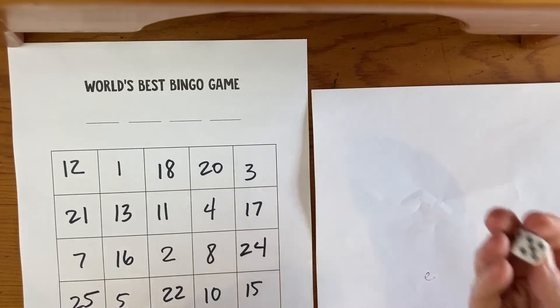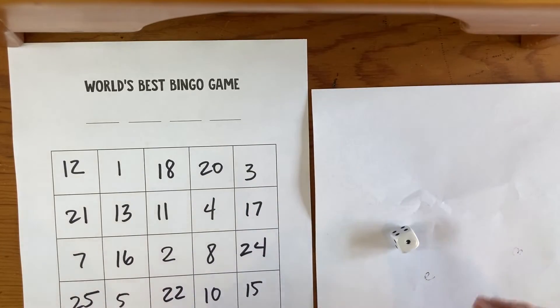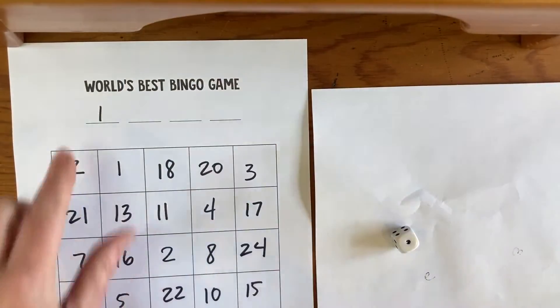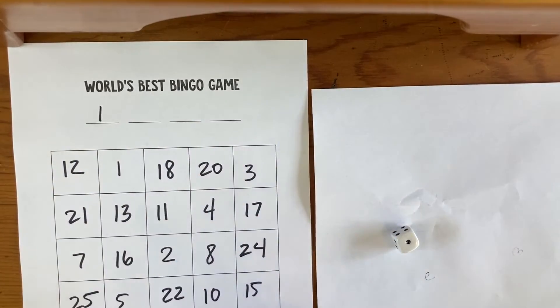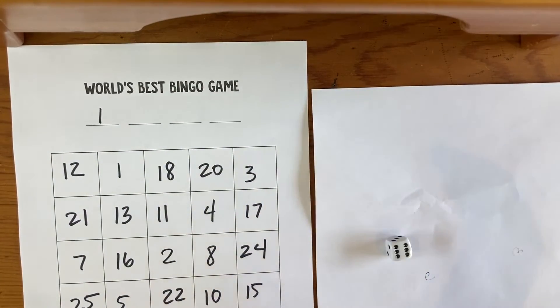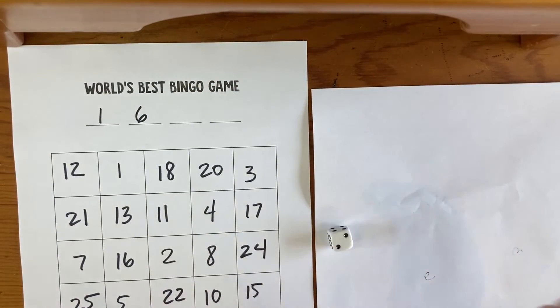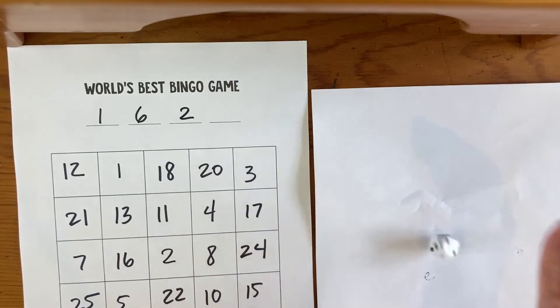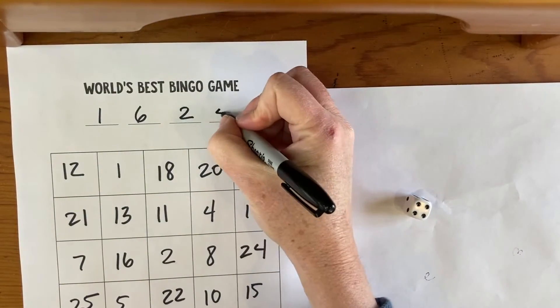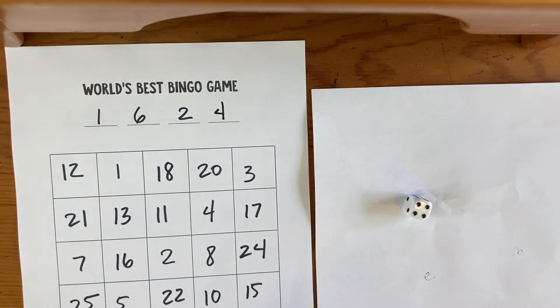Once you've done that, we need to roll the die four times. I got a 1, and we're going to write them in the four lines at the top here: a 1, a 6, a 2, and a 4. Every game is different because you're always rolling different numbers. You can play this game with as many people as you want or as few people as you want.